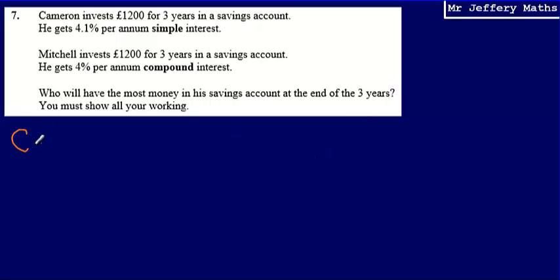So first of all, let's work out how much Cameron will have. Cameron is investing £1,200, and he is getting 4.1% interest per year, per annum, and it's simple interest. Now what that means is that he is going to be getting 4.1% of his £1,200, and he's going to get that added on at the end of each year.